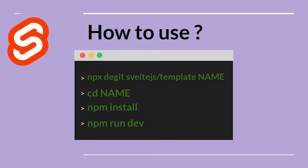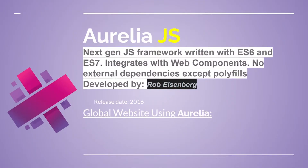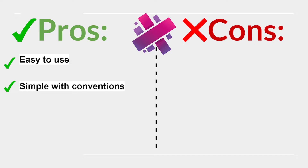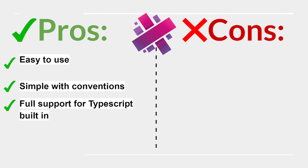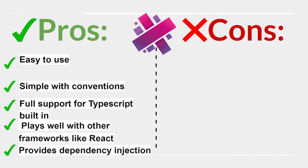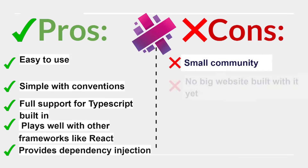Aurelia.js is a next-generation JavaScript framework written with ES6 and ES7, integrates with web components, and has no external dependencies except polyfills. Developed by Rob Eisenberg, released in 2016. Used by Microsoft. Pros: easy to use, simple with conventions, full TypeScript support, built-in dependency injection, and plays well with other frameworks like React.